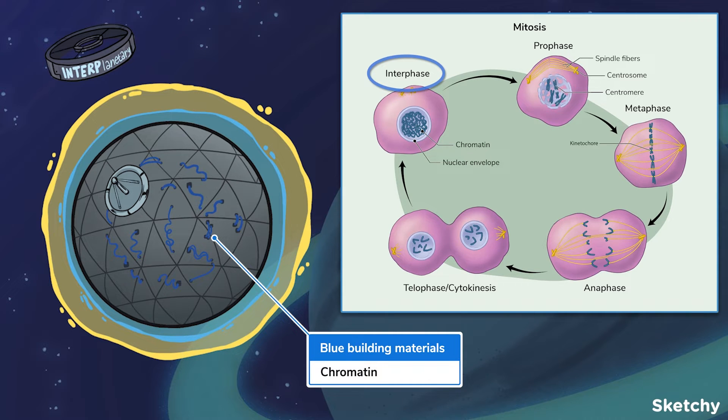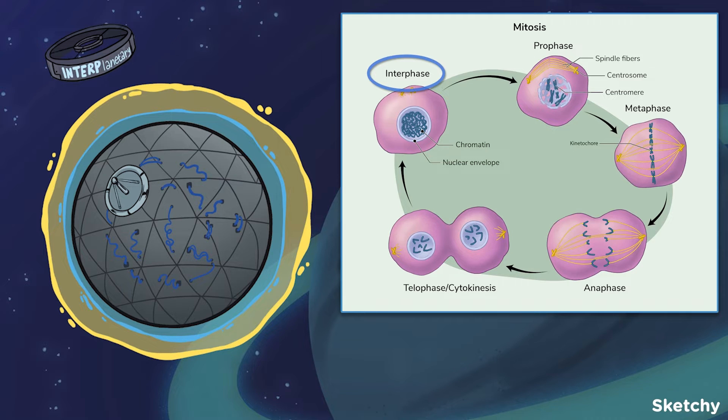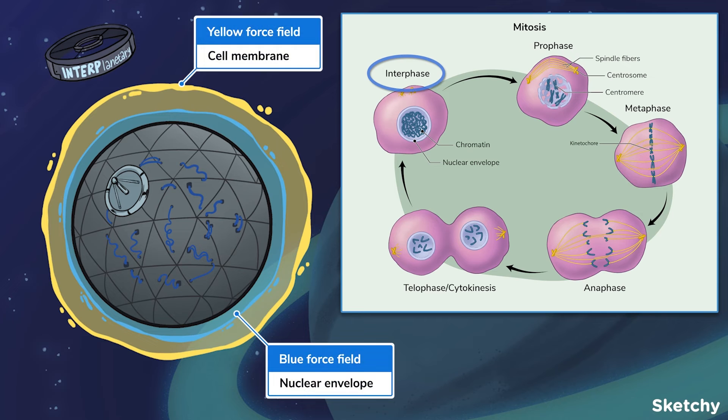Well, that doesn't look up to code. There's also a nucleolus, shown here by this planet-destroying laser. Oopsie, I mean satellite. Yeah, satellite. The nucleolus is a spherical body located inside the nucleus that's always present during interphase. The nucleolus is responsible for producing and assembling ribosomes. Finally, these force fields will symbolize the nuclear envelope and cell membrane, respectively. We'll continue to monitor them along the way.